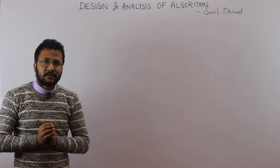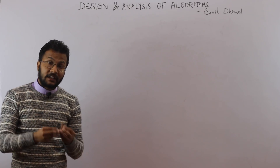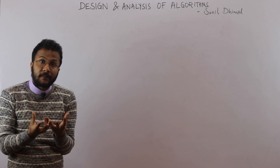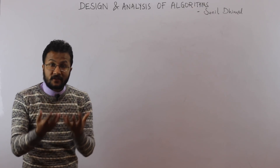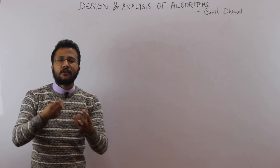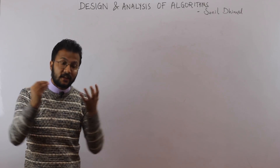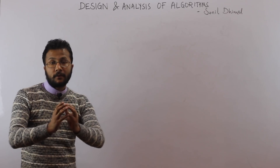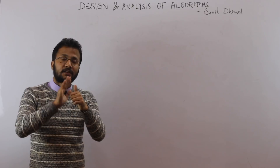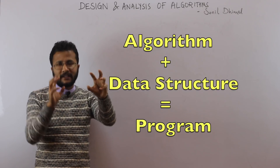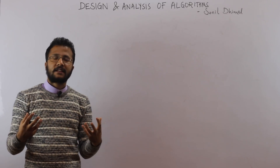Without learning algorithms you can write programs — your program may work for a given input and give the correct output. But if you know algorithms, you can write better programs. If you write better programs you become a good programmer; if you become a good programmer you make better software; better software is more marketable and has more users. To become a pro programmer, you need two things: algorithms and data structures. A proper mixture of both allows you to write great programs.